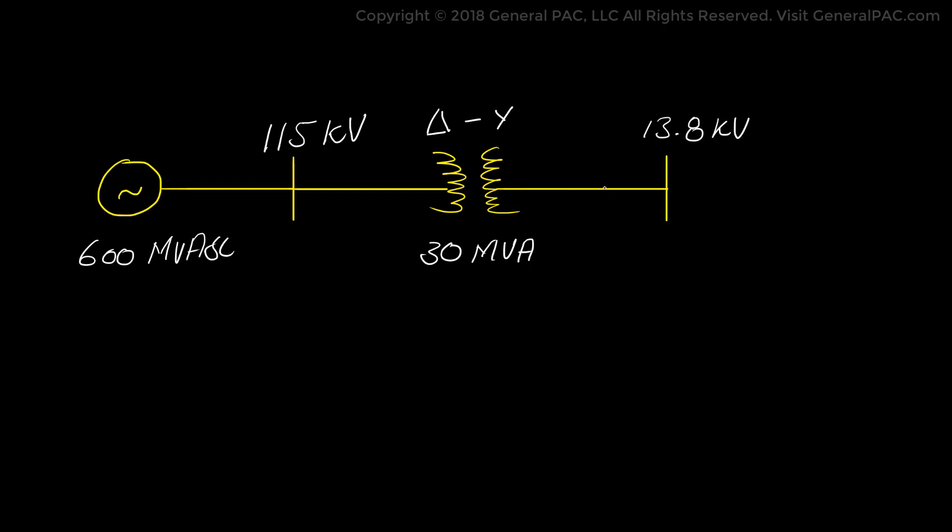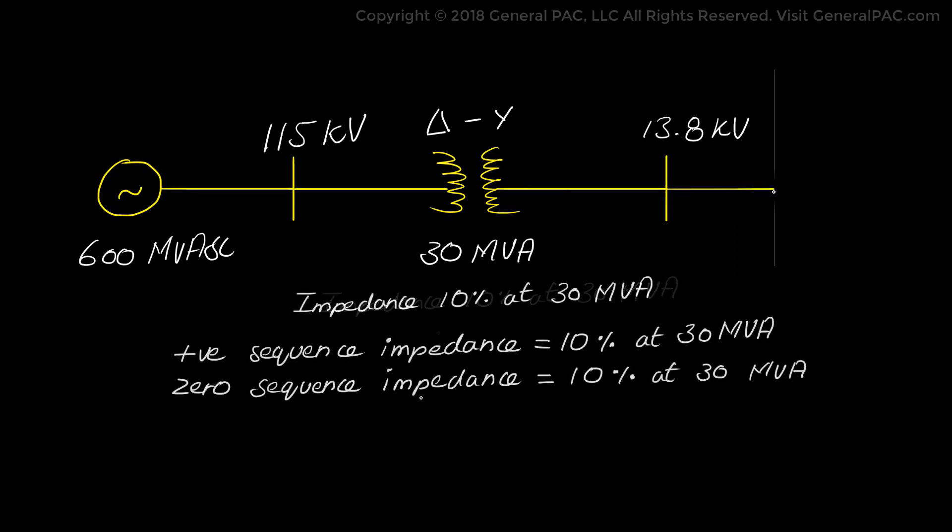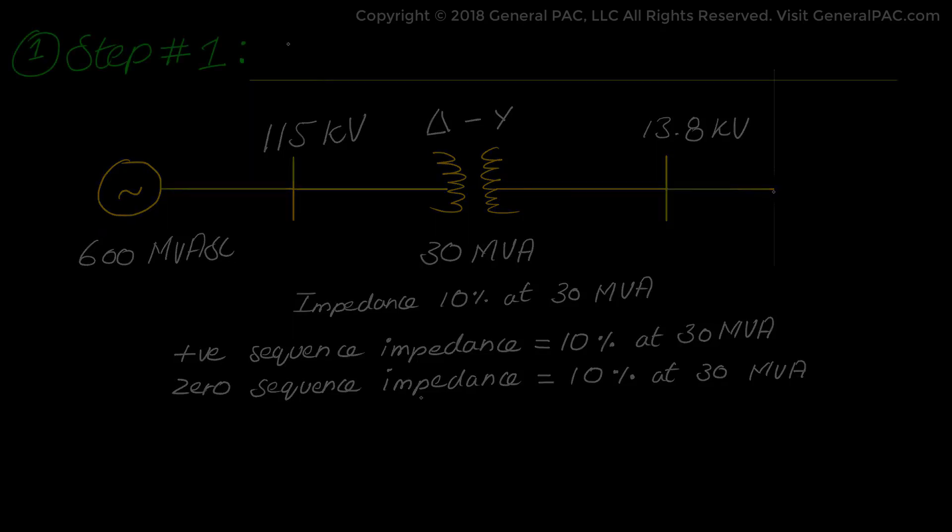We have a three-phase synchronous generator having a short circuit capability of 600 MVA short circuit connected to a 115 kV bus. A delta-y transformer rated at 30 MVA connects the 115 kV bus to the 13.8 kV bus and has a positive and zero sequence impedance of 10% at 30 MVA.